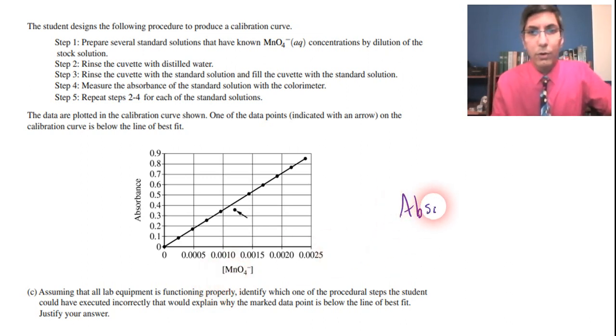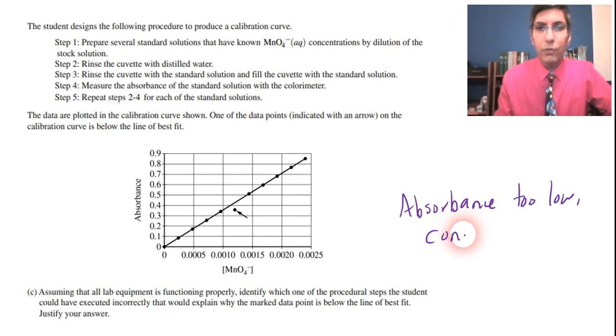And so since the absorbance was too low, you want to say that the concentration was too low. Now the question is actually saying, identify which one of the procedural steps the student could have executed incorrectly, that it would explain why the marked data point is below the line of best fit.